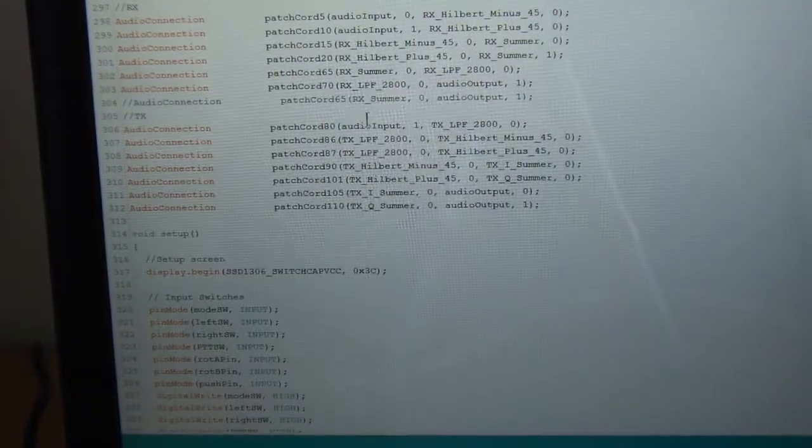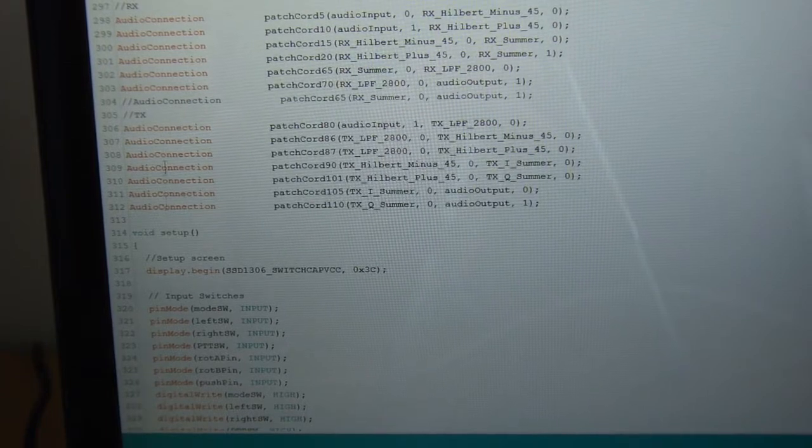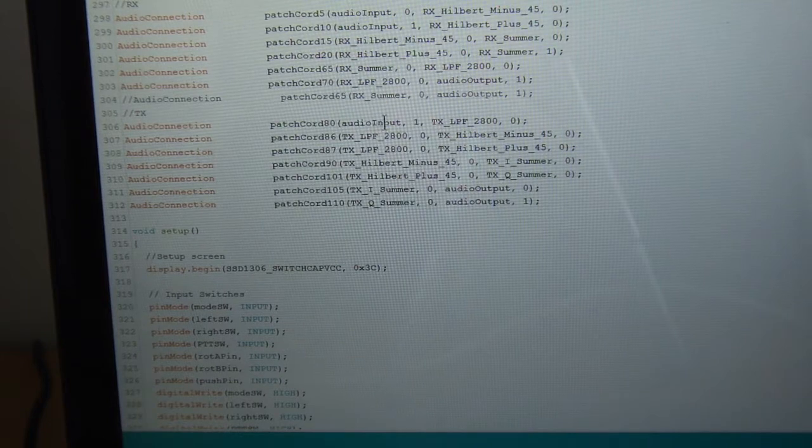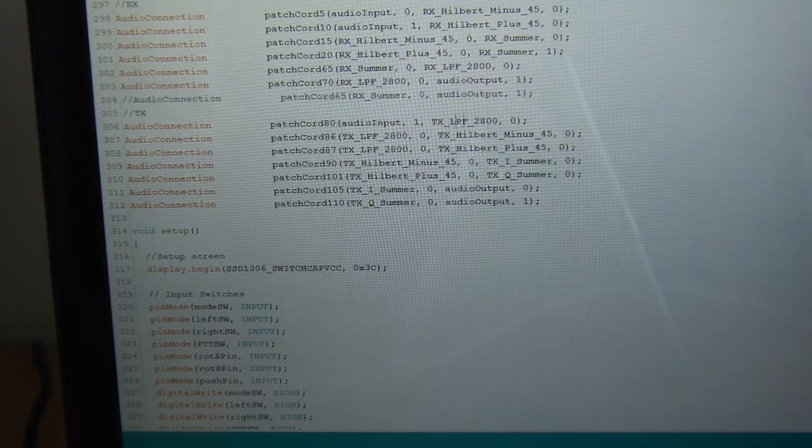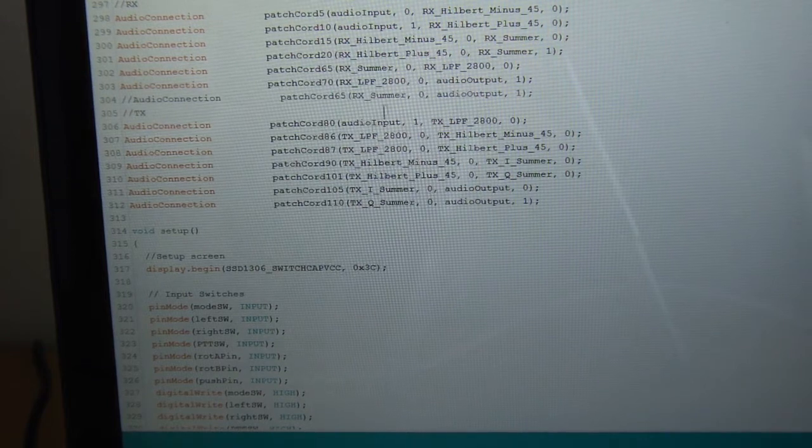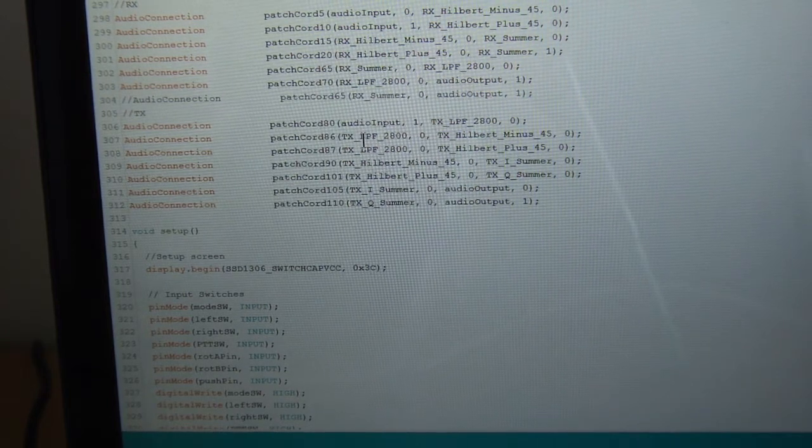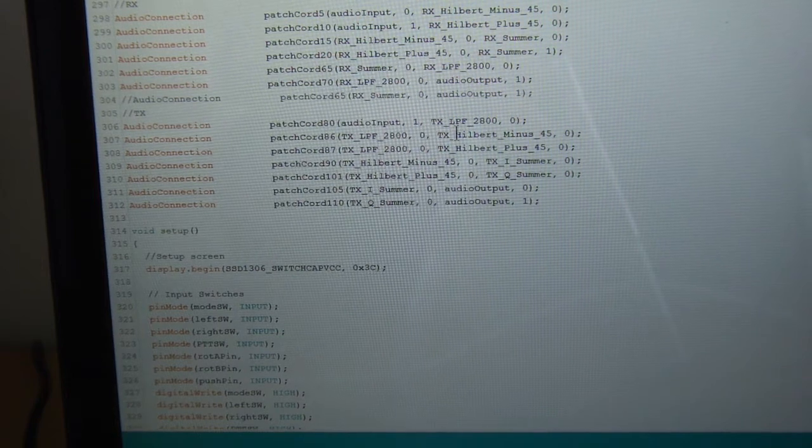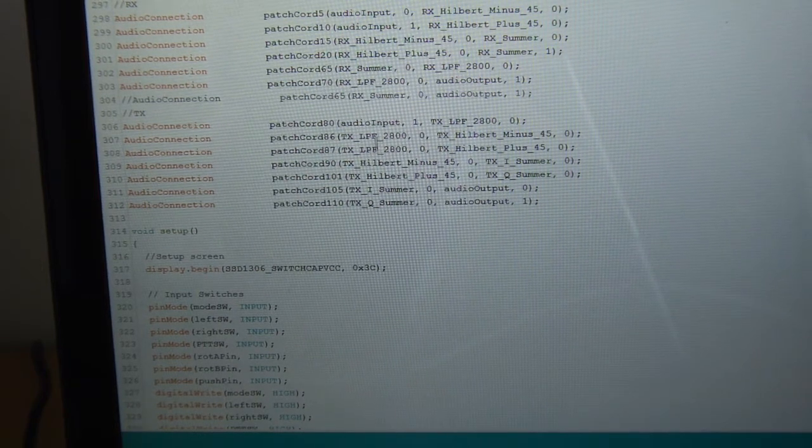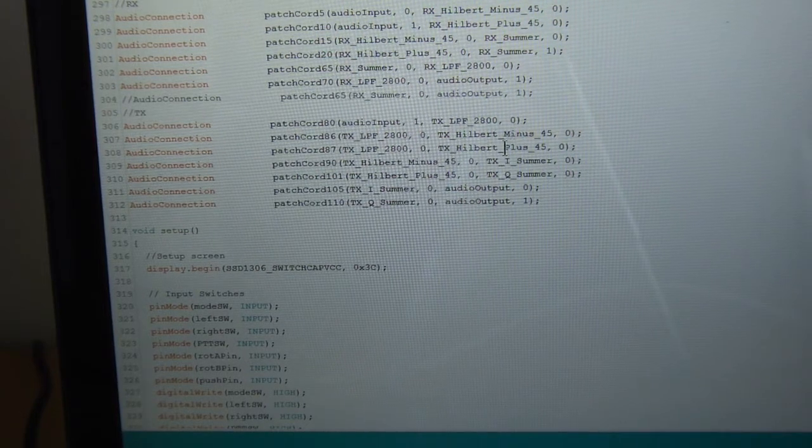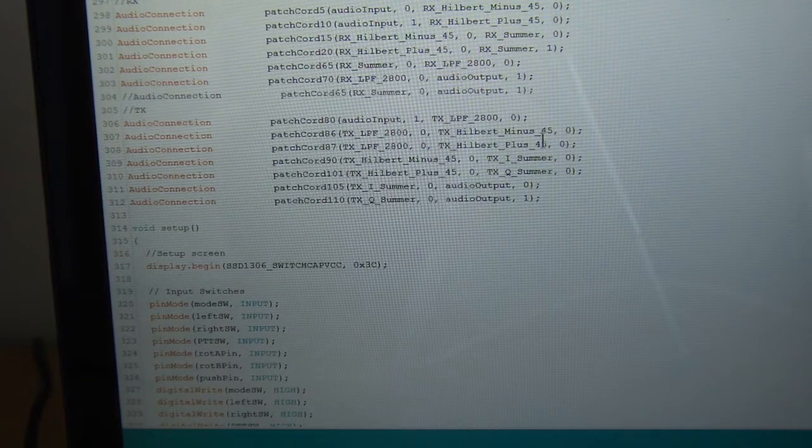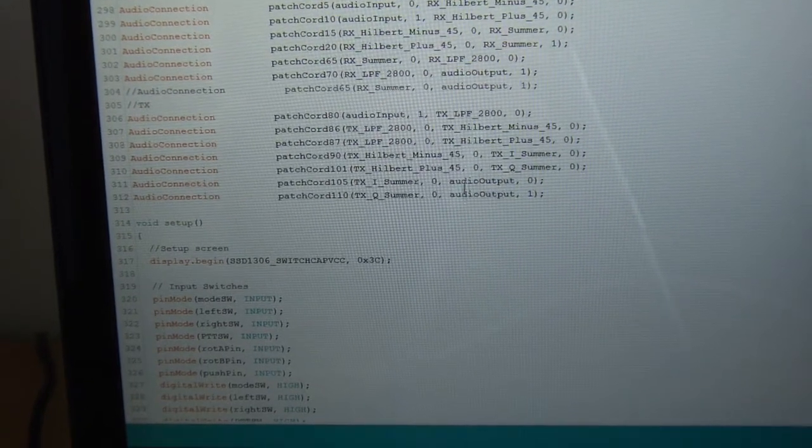As you can see the input on the transmit side, when I go to transmit these connections get enabled. The audio input's now going through this transmit low pass filter using the 2800Hz coefficients. The output of that filter gets shared. Its output goes to the Hilbert transform for the minus side, and also to the Hilbert transform for the plus. That starts to set up creating the quadrature audio which eventually gets fed out.